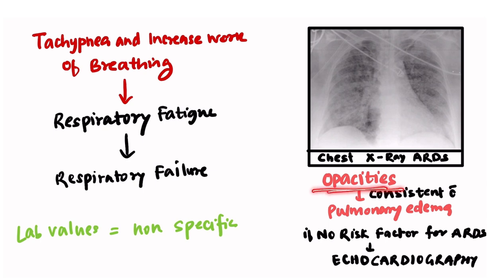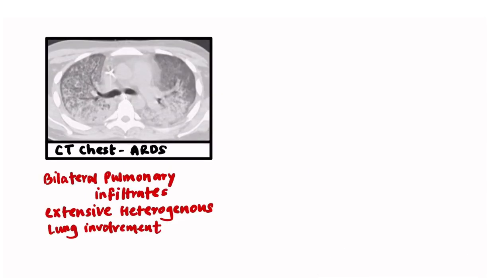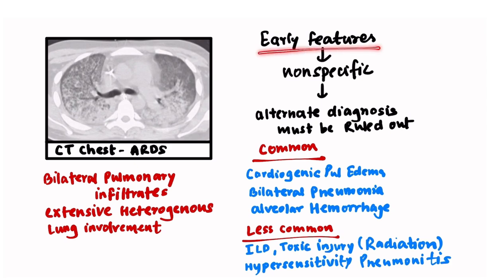Lab values in ARDS are usually non-specific. Chest X-ray shows opacities consistent with pulmonary edema, though it is sometimes difficult to distinguish from cardiogenic pulmonary edema — so echocardiography should be done if no ARDS risk factor is present. CT chest shows bilateral pulmonary infiltrates and extensive heterogeneous lung involvement. Since early features of ARDS are non-specific, alternate diagnoses must be ruled out: cardiogenic pulmonary edema, bilateral pneumonia, alveolar hemorrhage, ILD, toxic or radiation injury, and hypersensitivity pneumonitis.